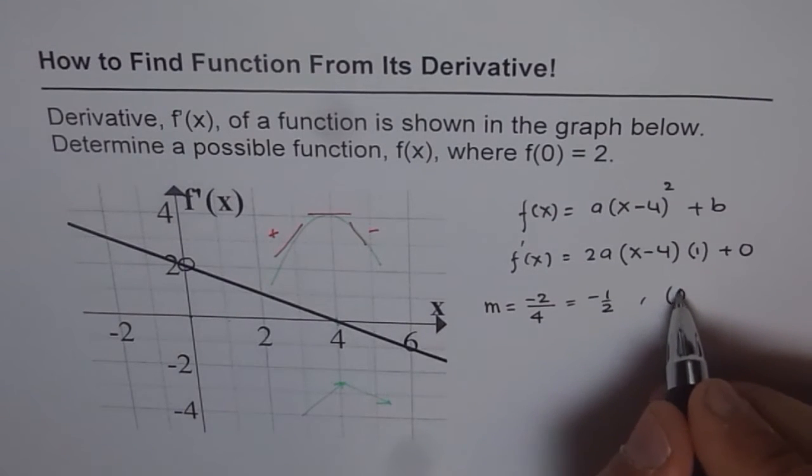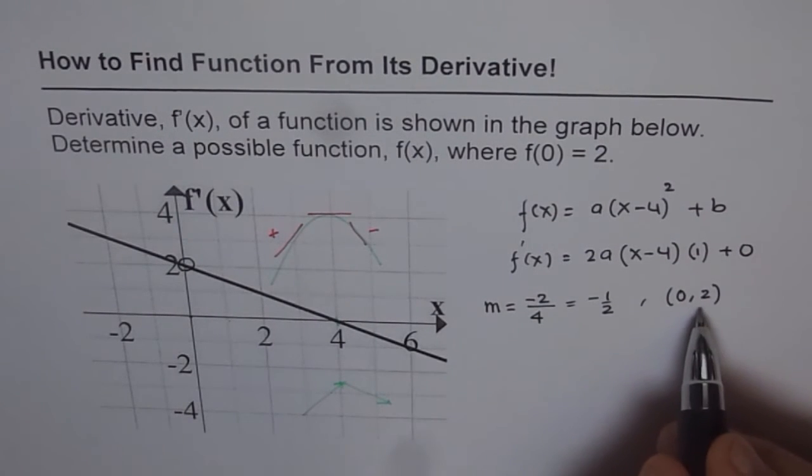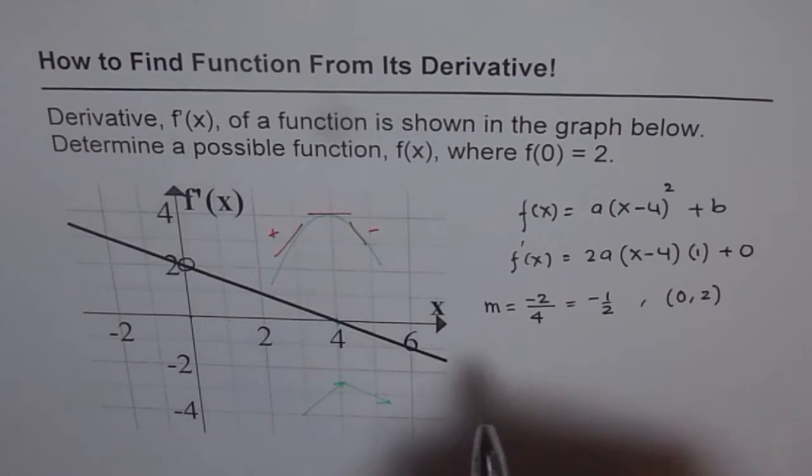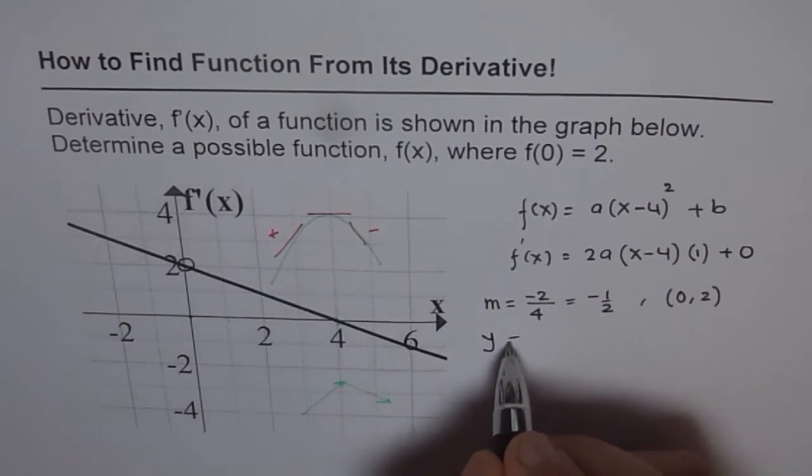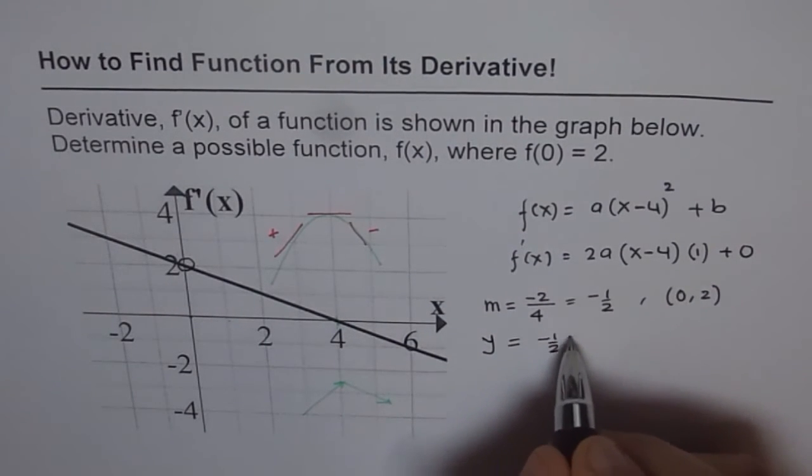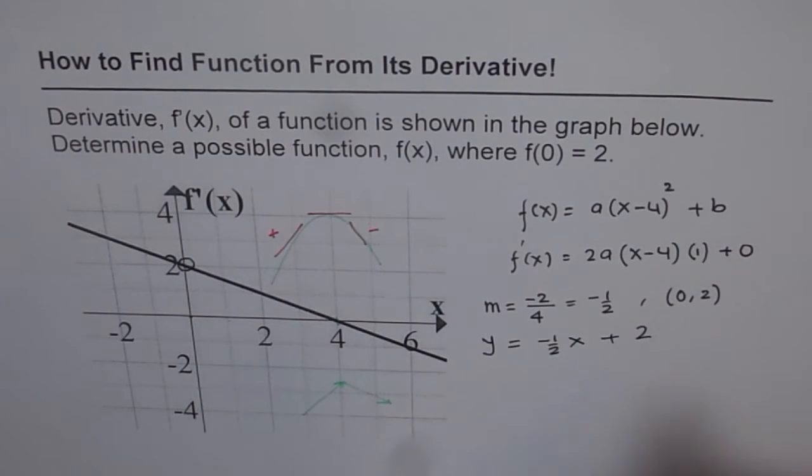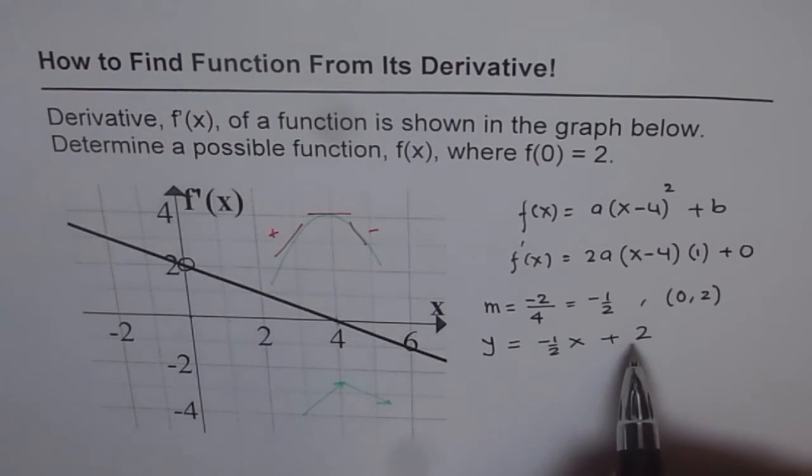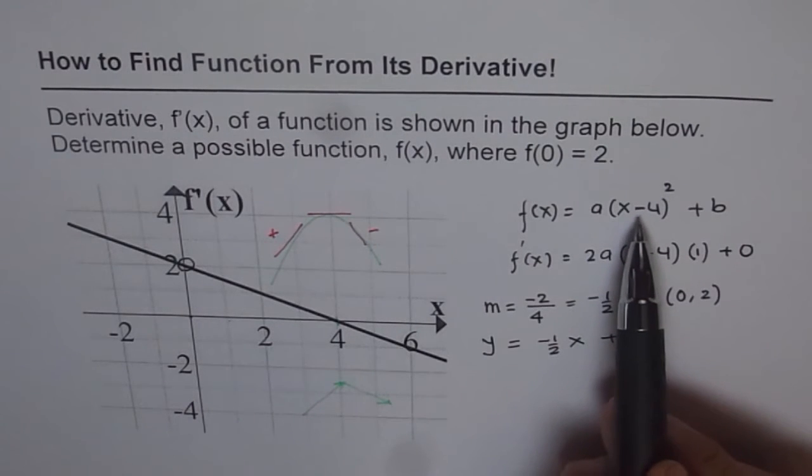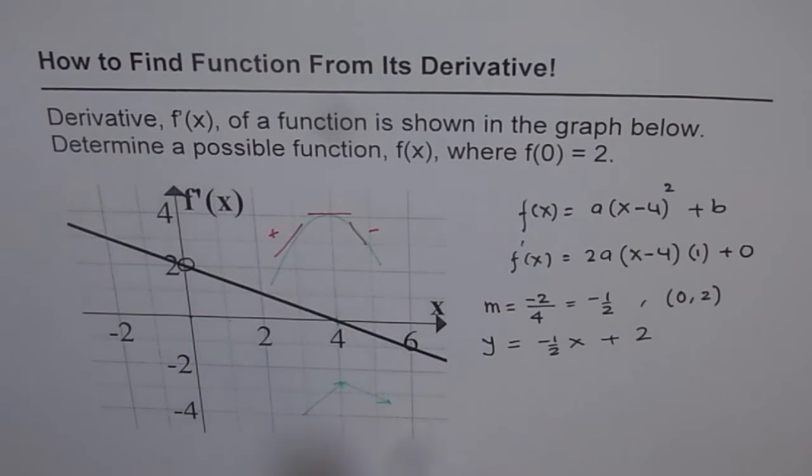So y intercept is 2. That means the point is (0, 2). Knowing slope and y intercept, we can always write down the equation of the line in slope-intercept form. That is y equals mx, which is minus half x plus b, which is 2. So that is the slope of the line. Now we know slope of the line and we have the derivative. These two things should be same for our function to be the function whose derivative is shown here.